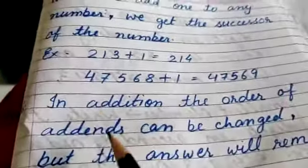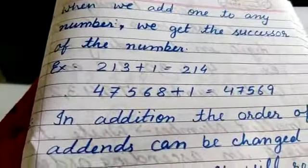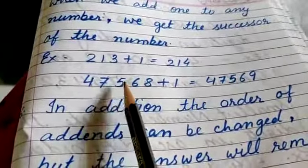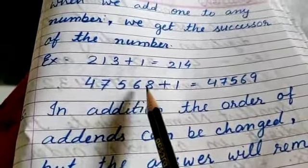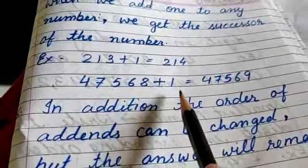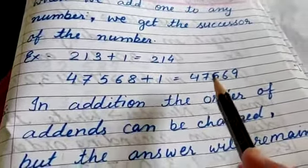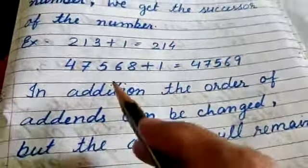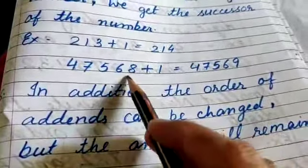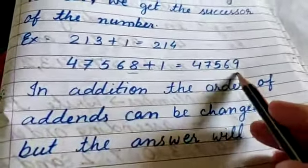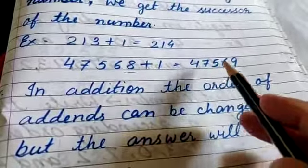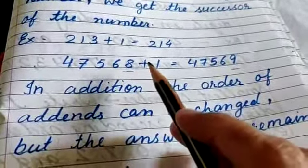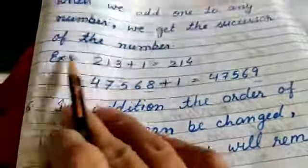Second example: here is the number 47568. If we add one in this number, the answer will be 47569. When we add one in eight, it becomes nine. So 47569 is the successor of 47568.